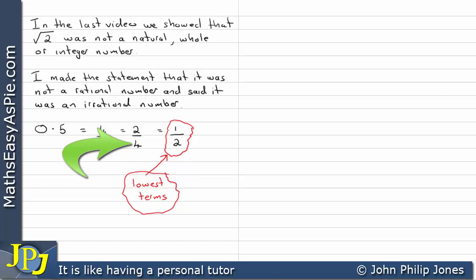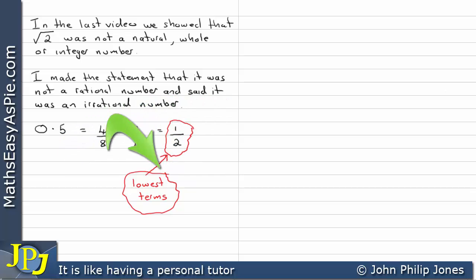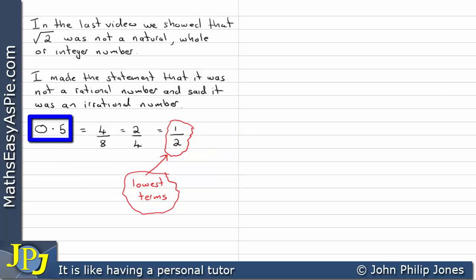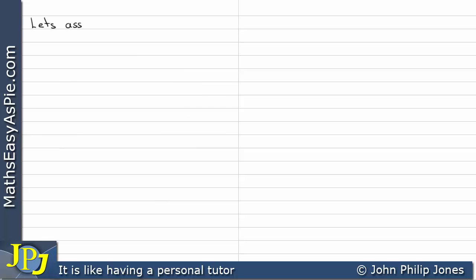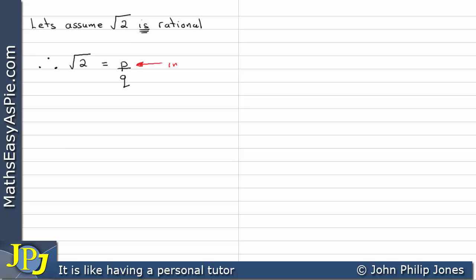We were able to divide the top and the bottom by 2 to reduce it to 1 over 2 — the 2 divided by 2 gives 1, and the 4 divided by 2 gives 2. So 0.5 can be represented by a ratio of integers, 1 over 2, in its lowest terms. Let's assume that the square root of 2 is rational. Therefore we can write √2 = p/q, where p is an integer, q is an integer, and the ratio p to q is in its lowest possible terms — i.e., they have no common factors.